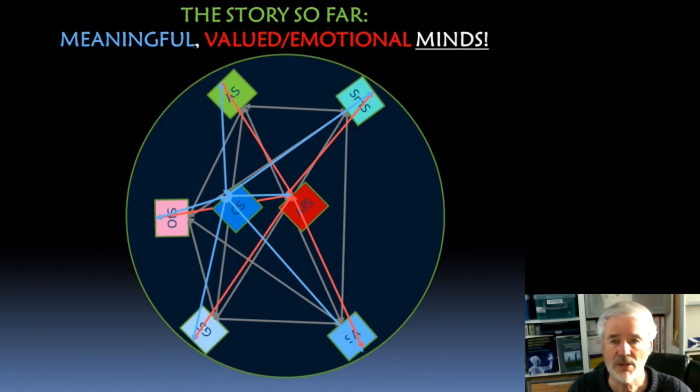So added to the outer ring of perceptual systems we put in the conceptual system which allows meanings to be associated with any of these other systems, and the emotional affective system which allows values and emotions to be linked up and co-activated with any of the other systems.